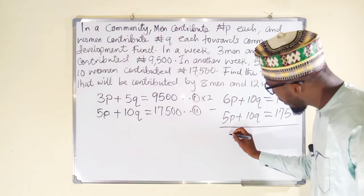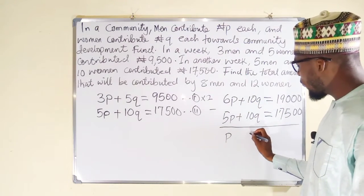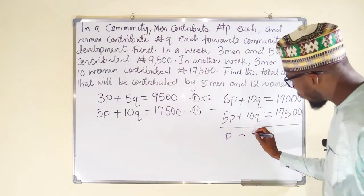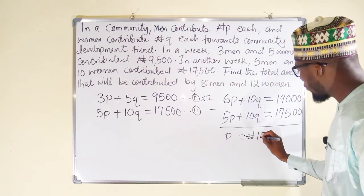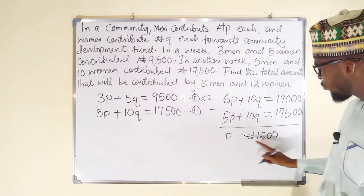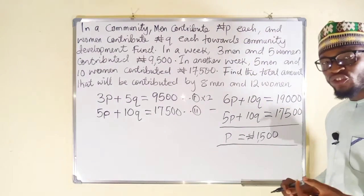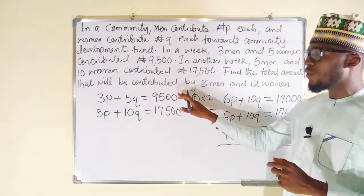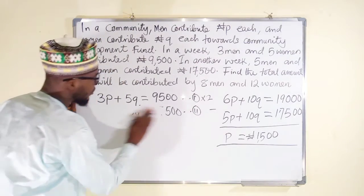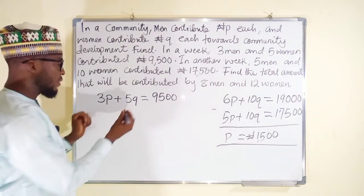Subtracting: 6P minus 5P is just P. 10Q minus 10Q is 0, so the Q terms cancel. 19,000 minus 17,500 is 1,500 naira. Therefore P = 1,500 naira, meaning each man contributed 1,500 naira. We can use this value to find the amount contributed by each woman by substituting back into one of our original equations.